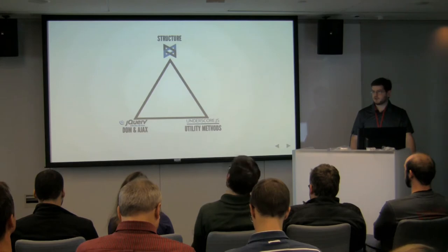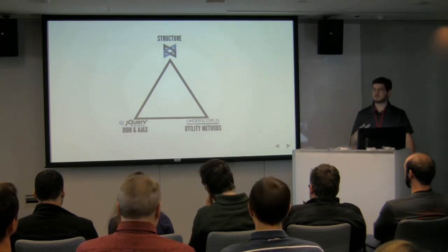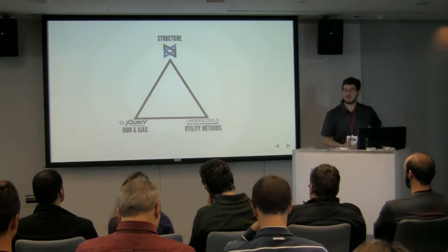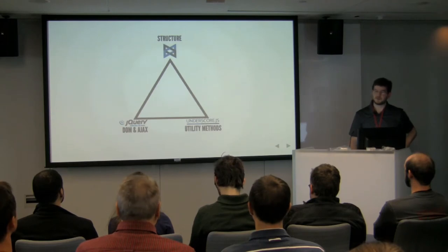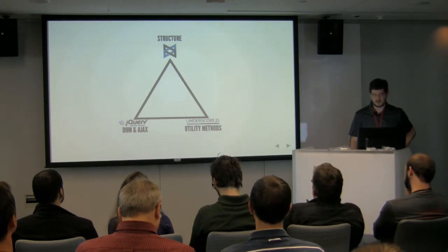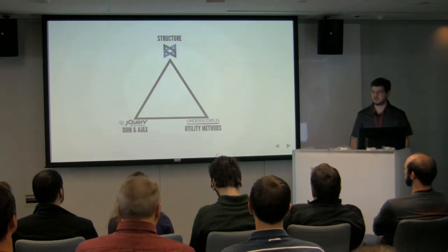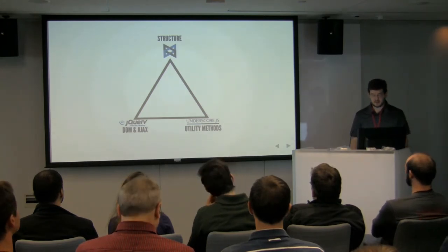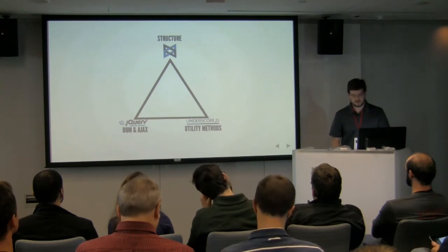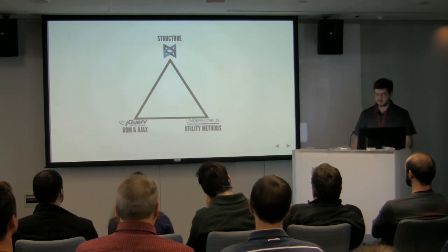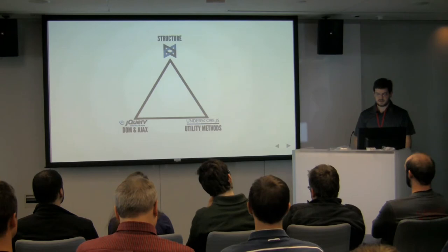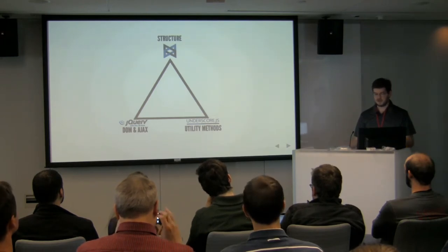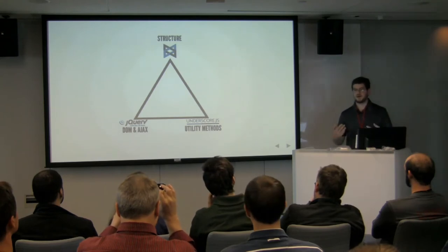These three libraries — Underscore, Backbone, and jQuery — all create a sort of pyramid that supports the JavaScript of WordPress core and of many things that we, as theme and plugin developers and application developers, build on top of WordPress. jQuery continues to do what it's good at — working with HTML documents, Ajax, and browser events. Underscore is a utility — a set of utility methods that make it easy to work with large sets of information. And then Backbone is a set of structures that ties all of this together.